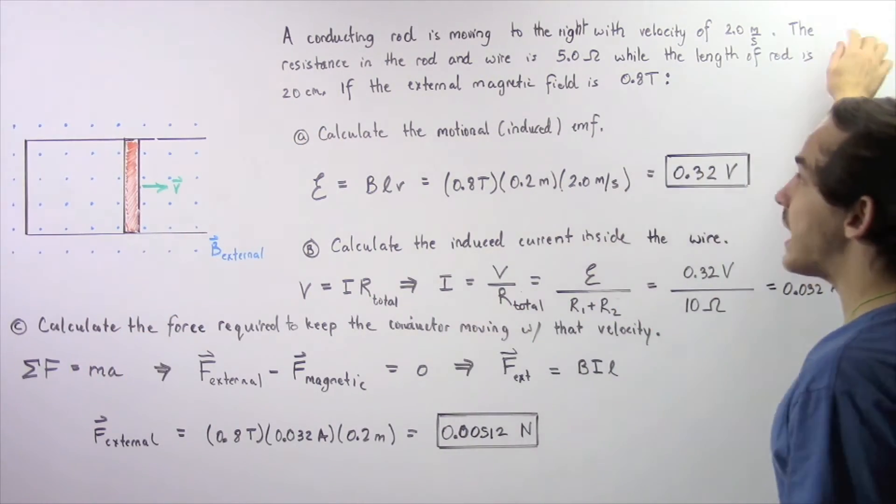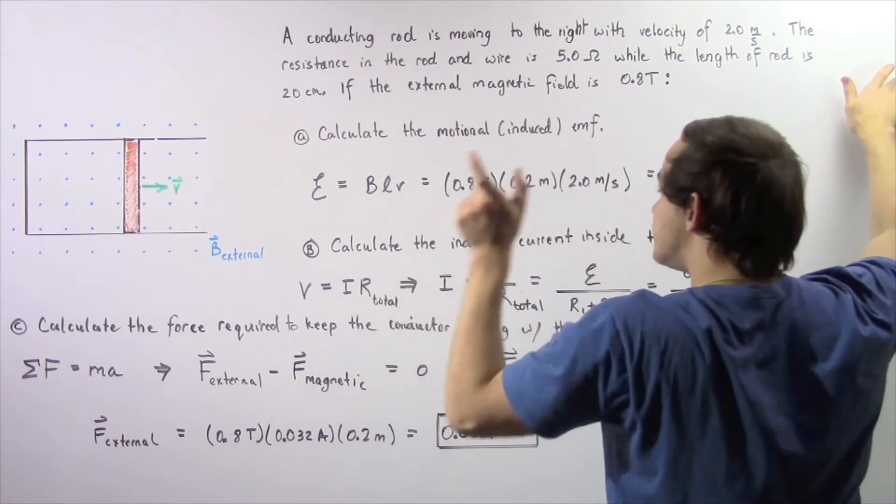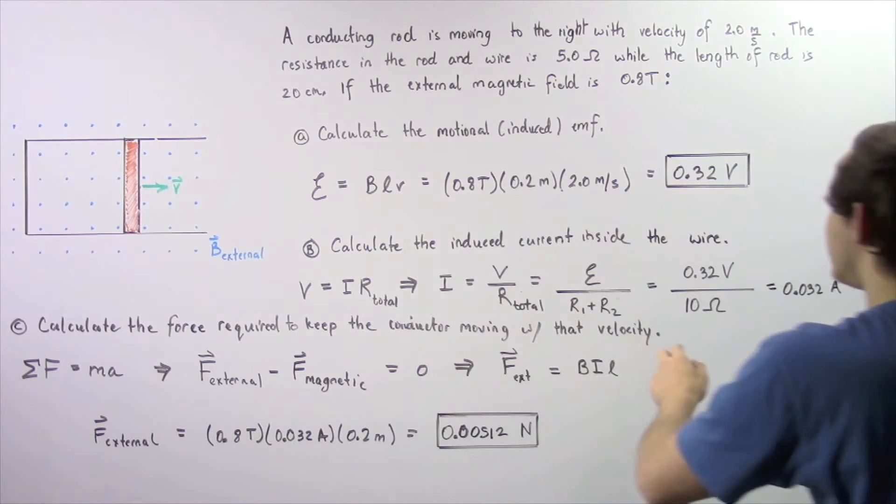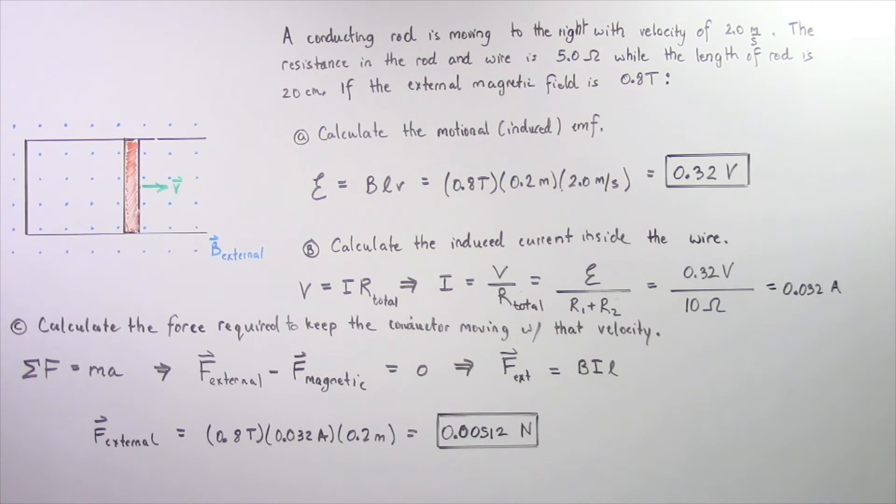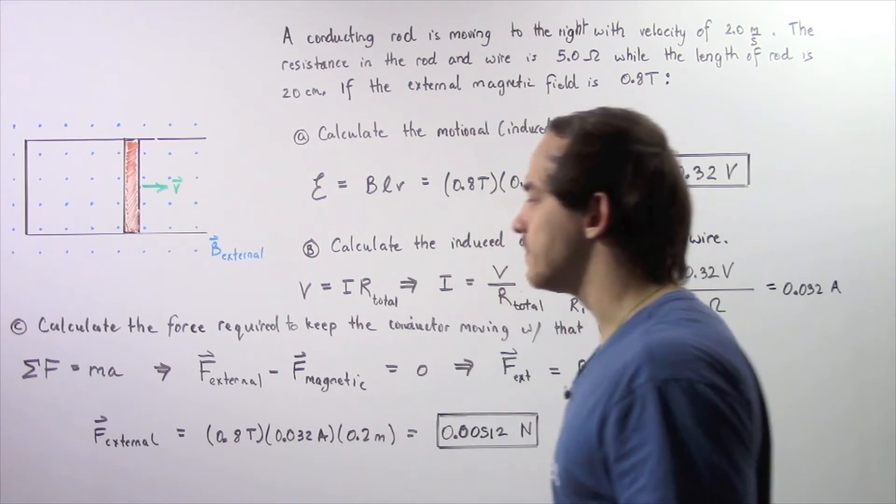Now we're given that the resistance in the rod and wire is 5 ohms each. So 5 ohms plus 5 ohms gives us 10 ohms. So 0.32 volts, calculated in part A, divided by 10 ohms, gives us 0.032 amps as our electric current inside our U-shaped conducting wire.